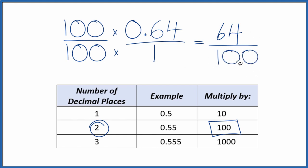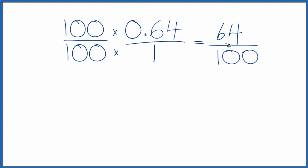Since these are even numbers, we can reduce this down to a simpler fraction. Let's give ourselves some room here. So 64 divided by 2, that's 32, and 100 divided by 2, that's 50.